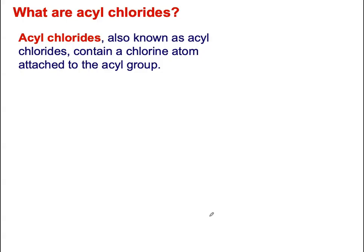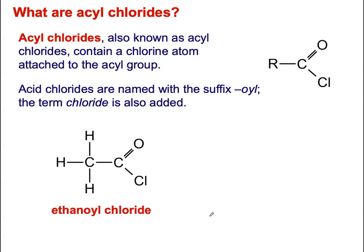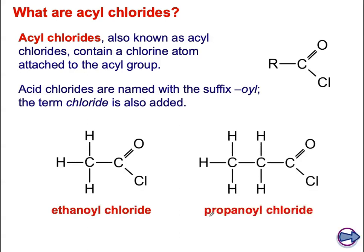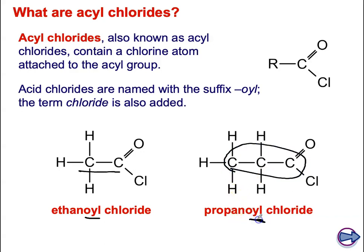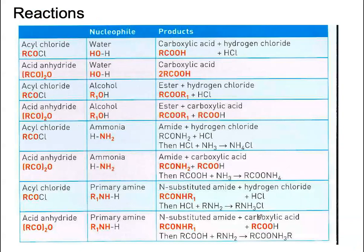A quick recap on naming acyl chlorides: the ending is -oyl chloride. So for example, ethanoyl chloride, or propanoyl chloride for a three-carbon chain. The naming is not too difficult. The key focus now is the mechanism.